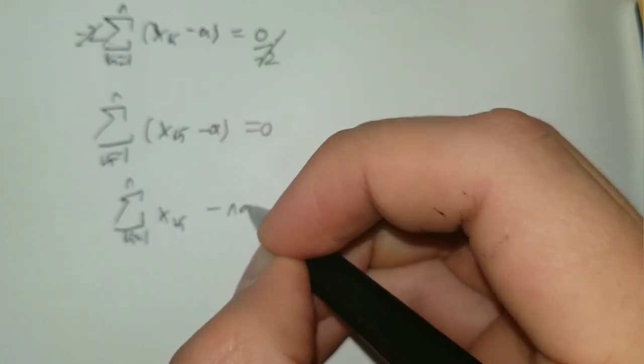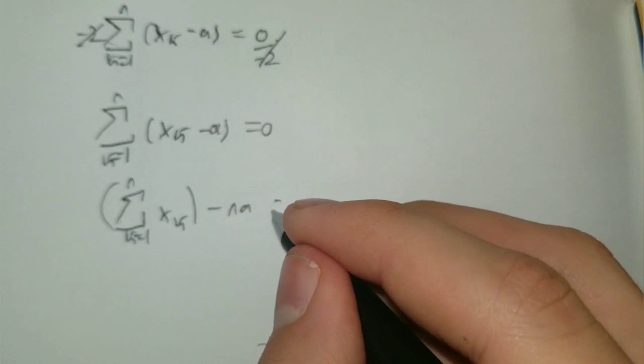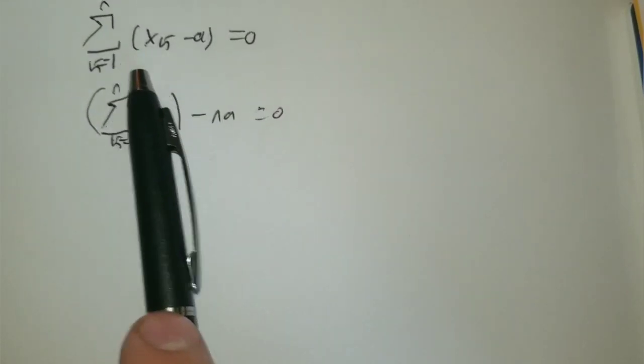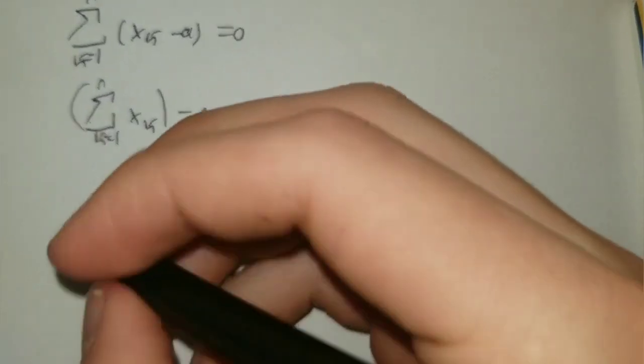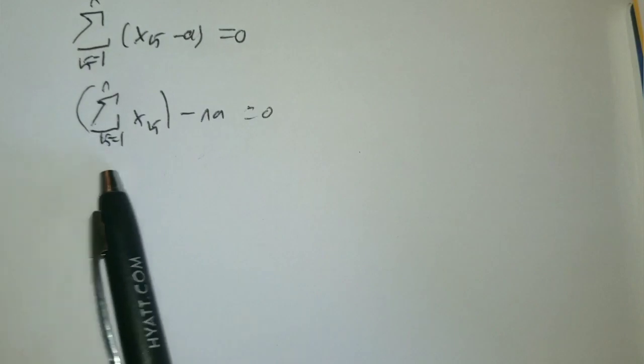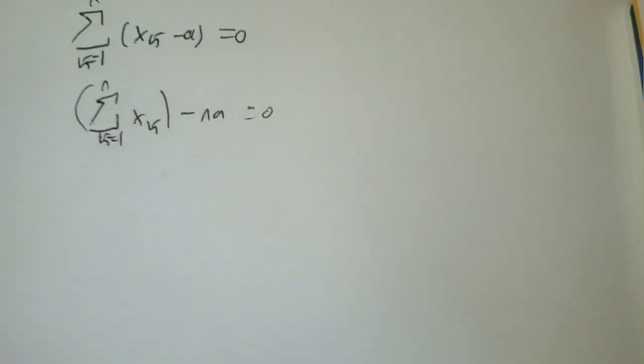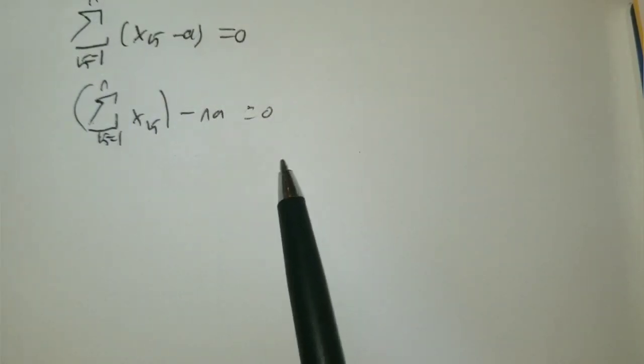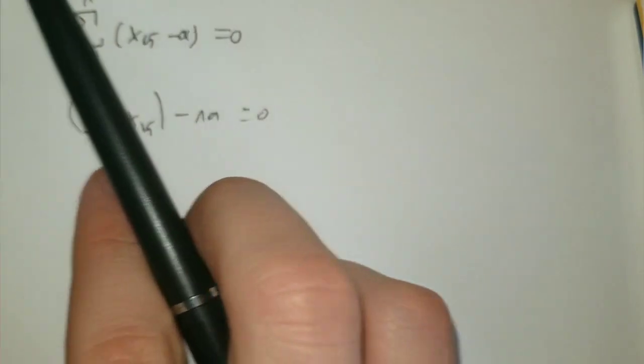Now we can split the series into two parts. The sum of xk minus na is equal to zero because you're just doing the following. You can convince yourself at home that this is true by expanding the series and finding there's n times of negative a within the series so we can just rewrite it as this.